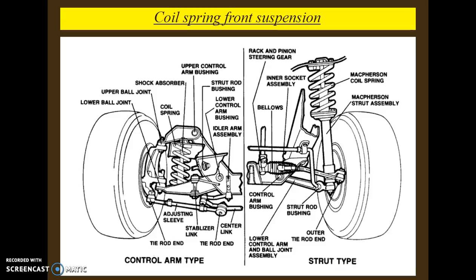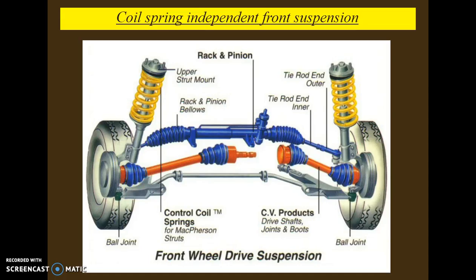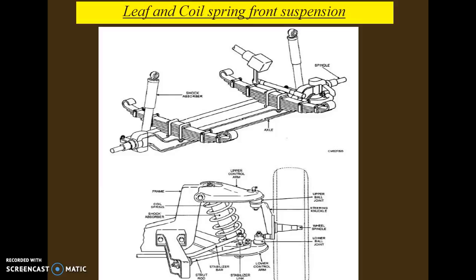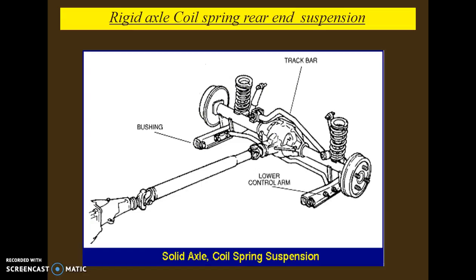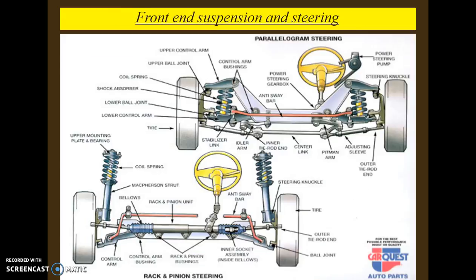Types of suspension systems shown in figures include: coil spring front suspension system, coil spring independent front suspension system (mounted independently on each tire), leaf and coil spring front suspension (used in heavy vehicles), conventional coil spring front suspension, rigid axle coil spring rear suspension, solid axle coil spring suspension, and front end suspension with rack and pinion and parallelogram steering.